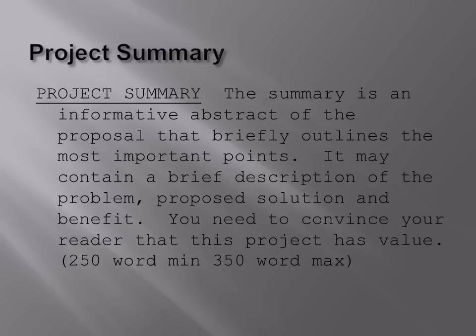It's also going to be what gets approved by the faculty member — we'll talk about that a little bit later. Here we have the official desired outcome from your official guidelines: the summary is an informative abstract of the proposal that briefly outlines the most important points. It's going to contain a brief description of the problem, your proposed solution, and the benefit. You'll also need to play the devil's advocate and make sure you've addressed all conflicting viewpoints.